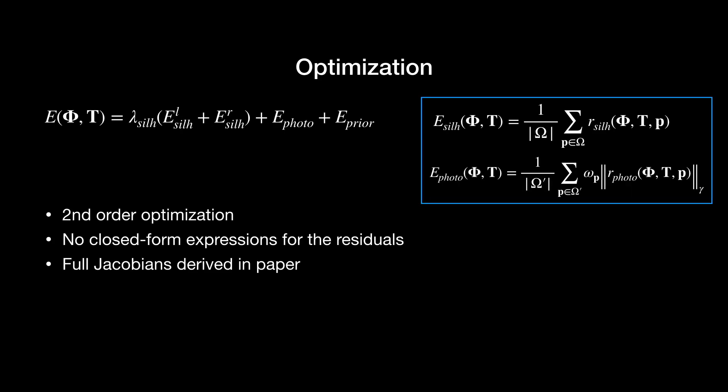The key of optimizing using the Gauss-Newton method is the Jacobians. In this work, there are two challenges on deriving the Jacobians. First, our shape is implicitly embedded in the SDF voxel grid. Second, when warping the pixels from the left to the right image, their depth is an implicit function of the object pose and shape. As a result, we don't have closed-form expressions for both the silhouette alignment and the photometric consistency terms. As one of the main contributions of our work, we give detailed derivation of all the required Jacobians. Please refer to our paper for details.